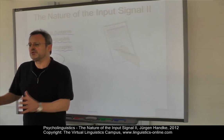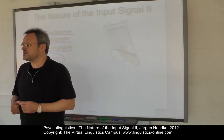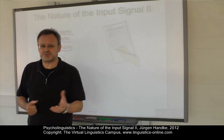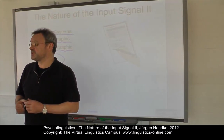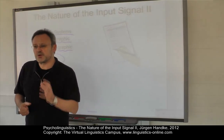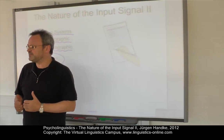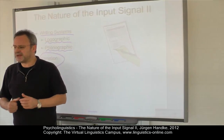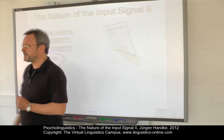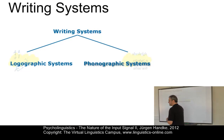Not all of the 7,000 attested languages have writing systems at all. In fact, only 15% of these languages have a writing system, and not all of these writing systems encode information in the same way. Early systems emerged from symbols that represented animals and other images. Modern writing systems can be subdivided into two central branches.